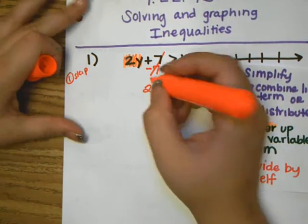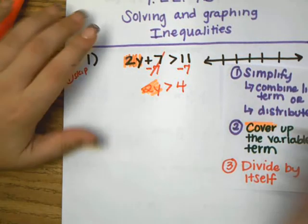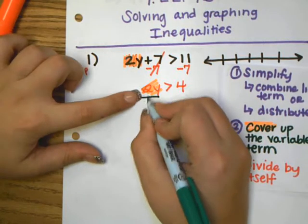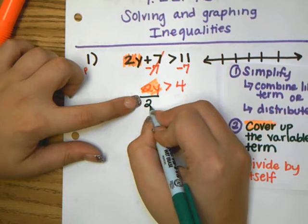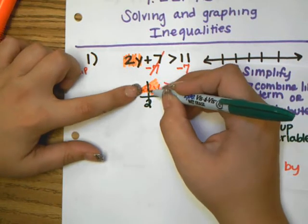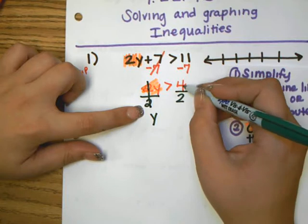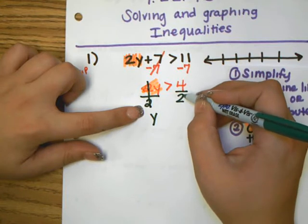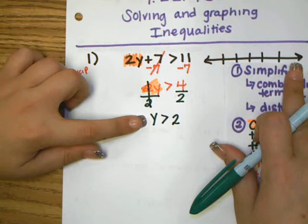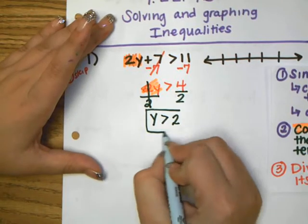So we get 2y is greater than 4. The very last step is to divide both sides by 2. That cancels because 2 divided by 2 is 1y, and 4 divided by 2 is 2. So our answer is y is greater than 2.